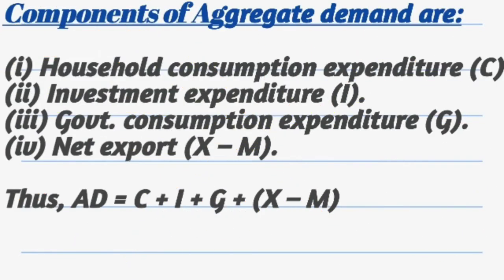Now, we move on to the components of aggregate demand. Aggregate demand has four components that are household consumption expenditure, investment expenditure, government consumption expenditure and net export. Net export is nothing but export minus import. If you demand something, then there is a reason that you demand that particular product.